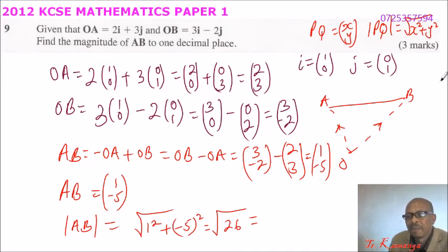So 5.099, because we are told to one decimal place, so you say it is 5.1 centimeters, and this is to one decimal place. So that's how you get the magnitude of the vector AB.